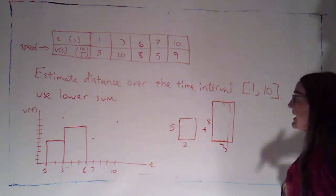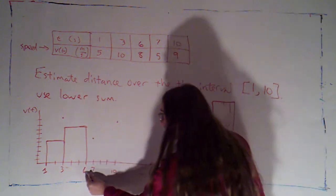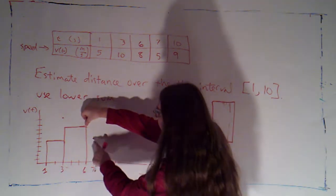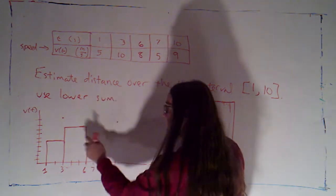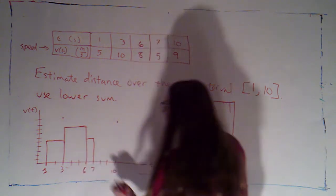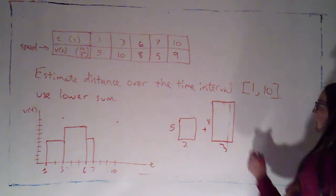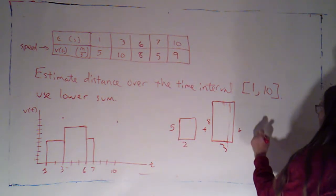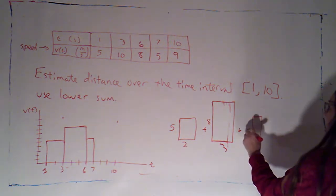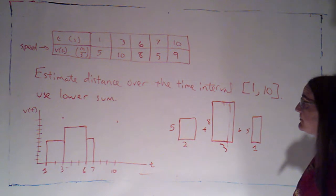Okay. Now my next interval is much shorter just going from 6 to 7. The speed here was 8. The speed here is 5. 5 is the smaller. So I'll extend that across the interval and connect that to the x axis. So I'm getting this little rectangle here. The base is just 1 and the height is 5.